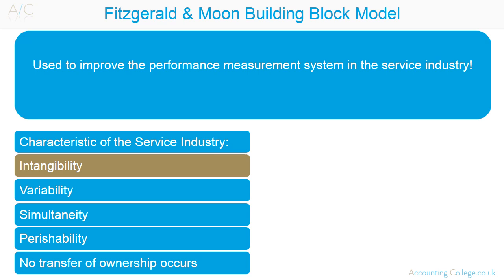Intangibility: with a service industry, as opposed to a manufacturing industry, the output is not a physical product. For example, with regards to a college course, the service is the lecture given by the lecturer, as opposed to a tangible product.